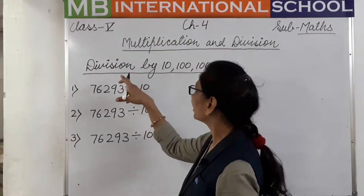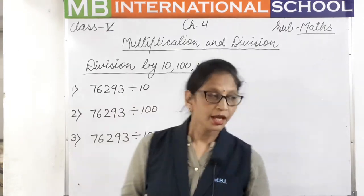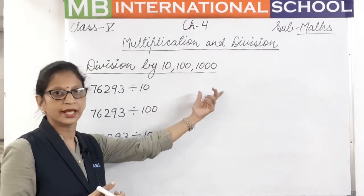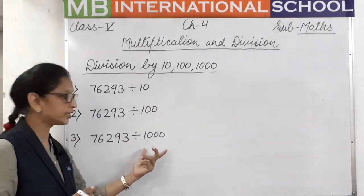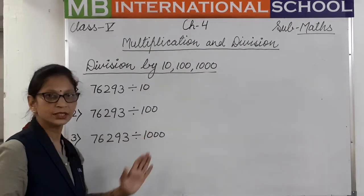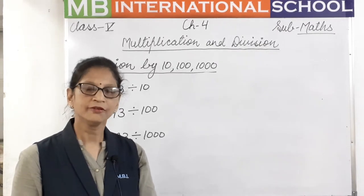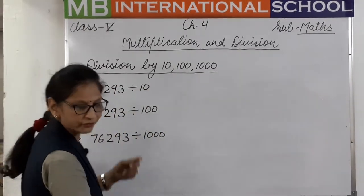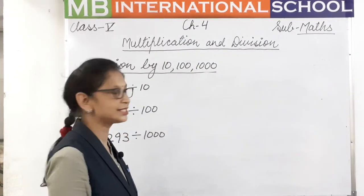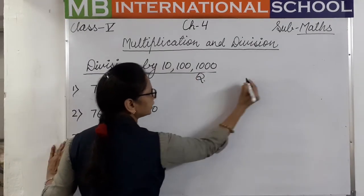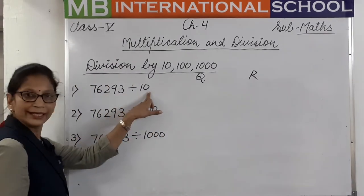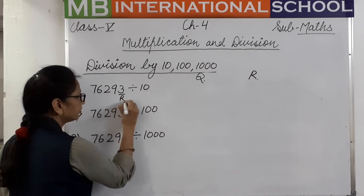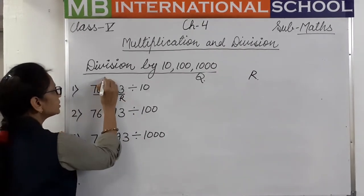Now we will learn how to carry out division by 10, 100, and 1000. When a number is divided by 10, 100, or 1000 — or any divisor that has only zeros — we can directly find the quotient and remainder. When dividing by 10, which has one zero, the digit at the ones place becomes the remainder, and the remaining digits become the quotient.